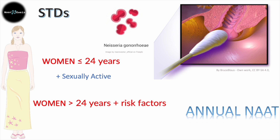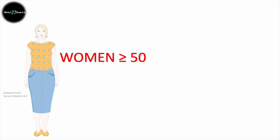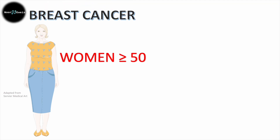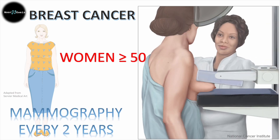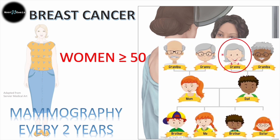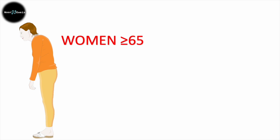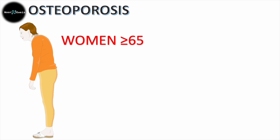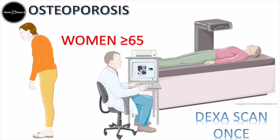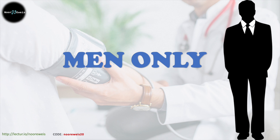Women 50 and up have to be screened for breast cancer with mammography every two years. Just like with colon cancer, if she has a first-degree relative with breast cancer, she screens 10 years earlier. This is different from those with BRCA mutations, who are high risk and start screening at age 40. Finally, women 65 and up are screened for osteoporosis with a DEXA scan once, and then we decide further based on her risk.